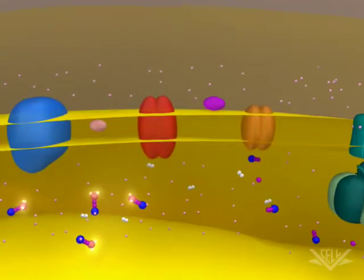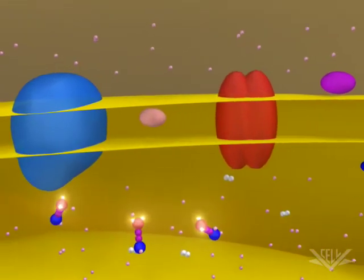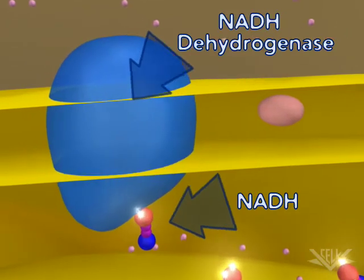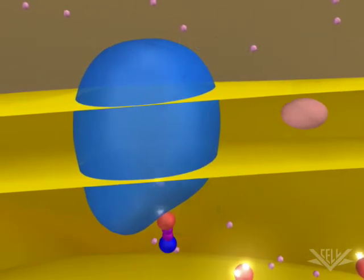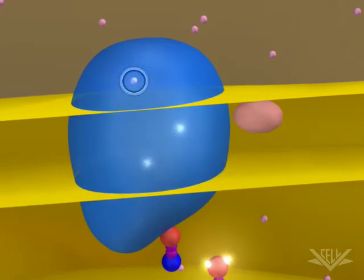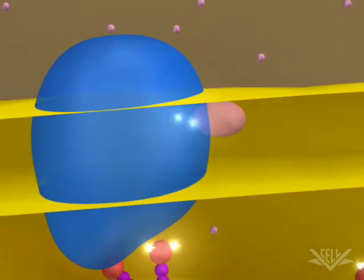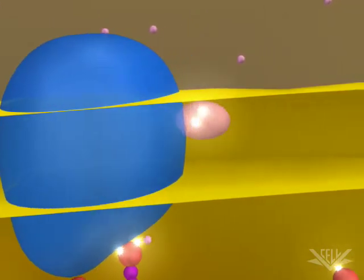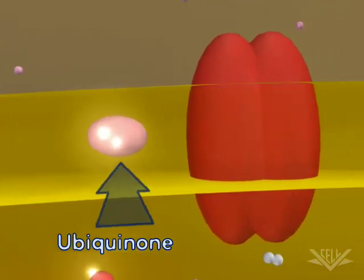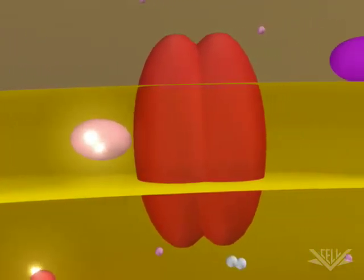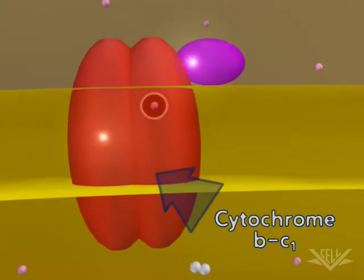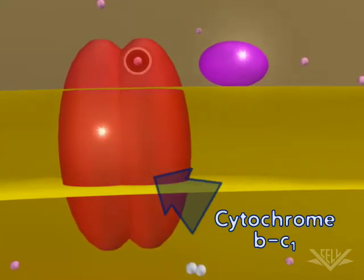At the start of the electron transport chain, two electrons are passed from NADH into the NADH dehydrogenase complex. Coupled with this transfer is the pumping of one hydrogen ion for each electron. Next, the two electrons are transferred to ubiquinone, a mobile transfer molecule that moves the electrons to the cytochrome BC1 complex.